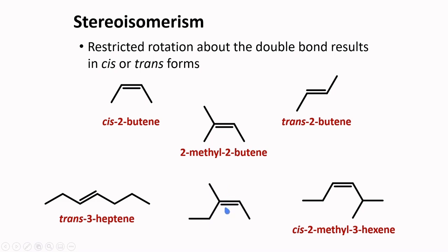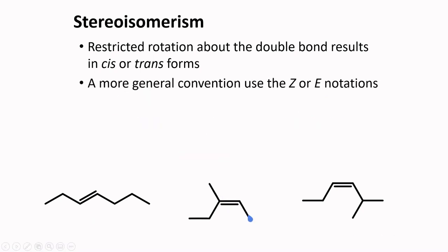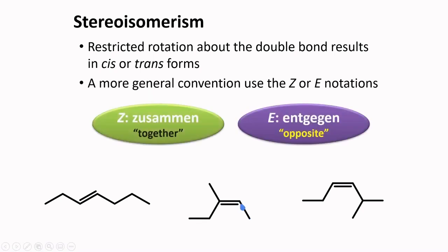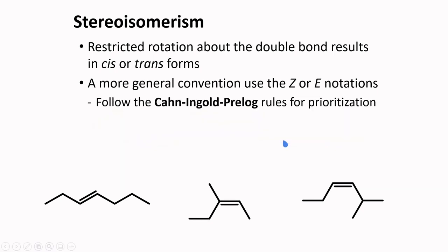When naming is complicated using the cis and trans scheme, we use the more general Z or E notation. Z comes from the German word 'zusammen', meaning together or on the same side. E comes from 'entgegen', meaning opposite or on opposite sides. This naming scheme follows the Cahn-Ingold-Prelog rules for prioritization of atoms linked to double-bonded carbons. Higher priority is given for higher atomic number, or atomic mass in the case of isotopes.